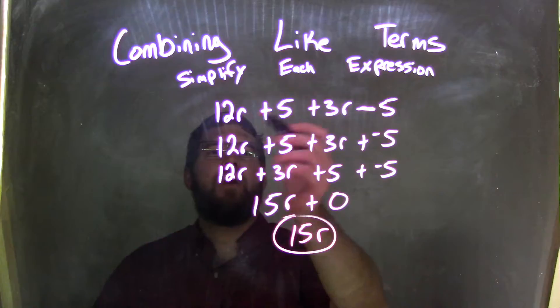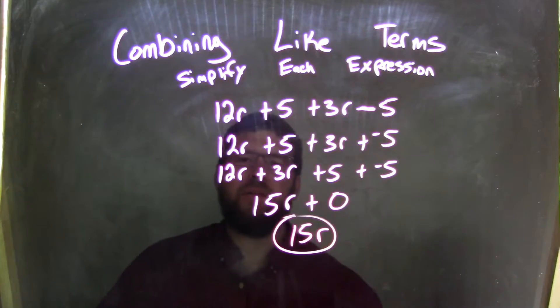So again, let's recap. We have 12r plus 5 plus 3r minus 5. We wrote that minus 5 to be adding a negative.